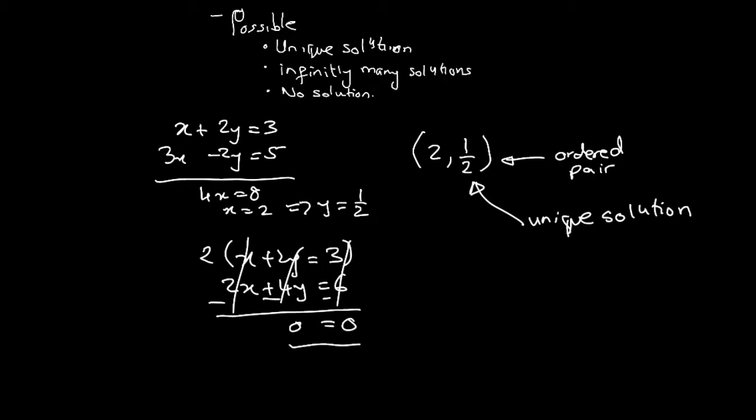This situation is interpreted as that both equations are satisfied by many combinations of x and y. Many combinations of x and y's will satisfy the two equations. This is interpreted as there are infinitely many solutions.